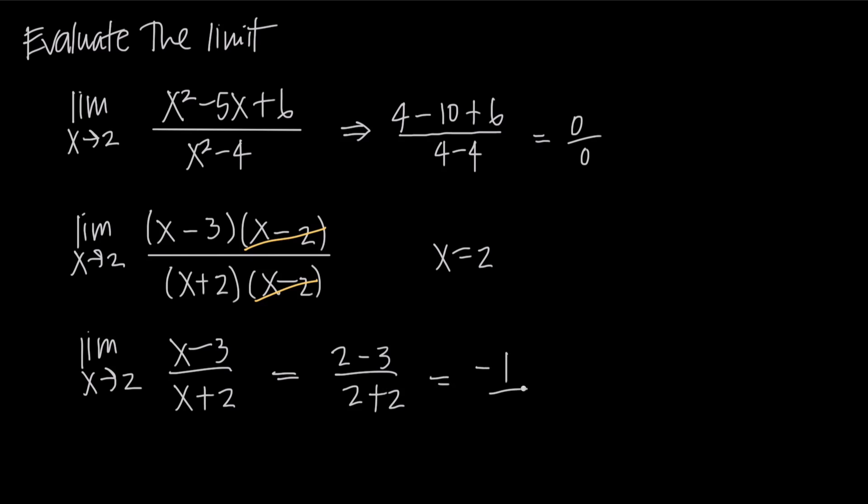When we take 2 plus 2, we get a positive 4. So we can say then that the limit is going to be negative 1 fourth. So the limit of the function as x approaches 2 is going to be negative 1 fourth. And that's how you use factoring to solve for a limit.